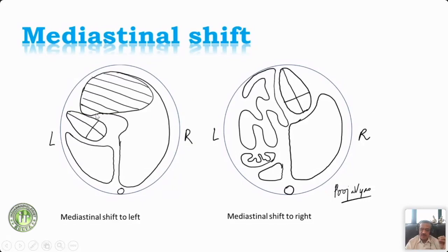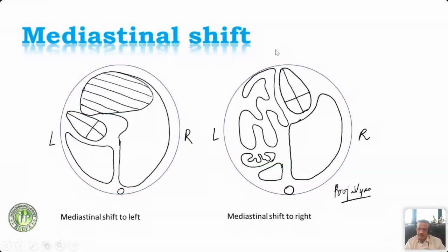In mediastinal shift, the heart still points to the left, but the entire mediastinum gets shifted to one side. If there is a mass on the right side, the mediastinum shifts to the left but the apex of the heart still points to the left. Similarly, if there is a large mass on the left side, the entire mediastinum shifts to the right but the apex still points left. Axis deviation is associated with cardiac anomalies, whereas mediastinal shift is a hallmark of a thoracic abnormality — one of the key whistleblowers.